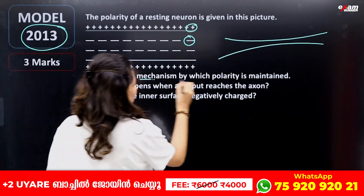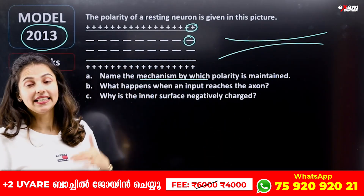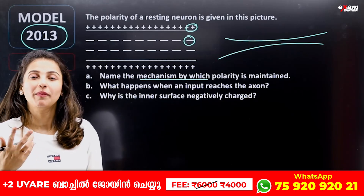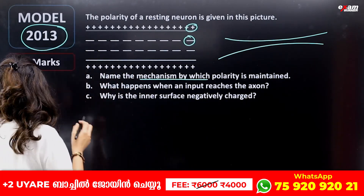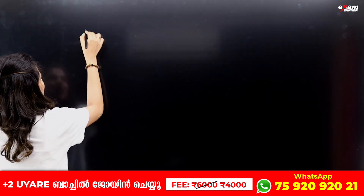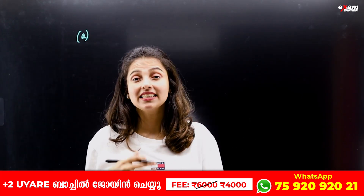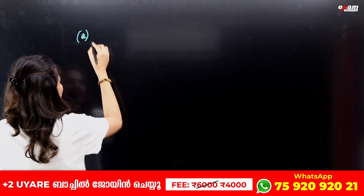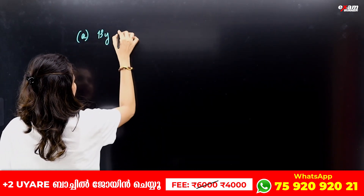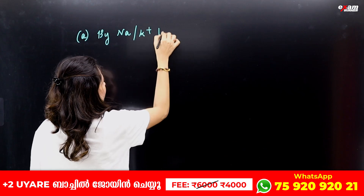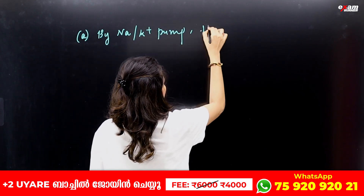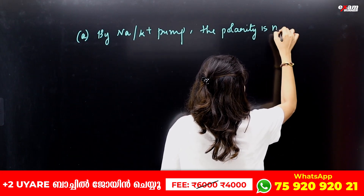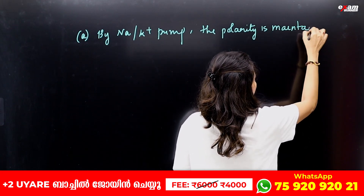The question is: name the mechanism by which polarity is maintained. This polarity is maintained by the active pumping of sodium and potassium — by the sodium-potassium pump. The polarity is maintained by the sodium-potassium pump.